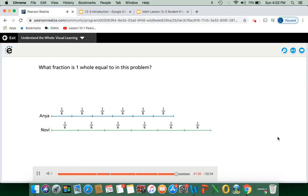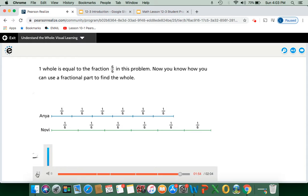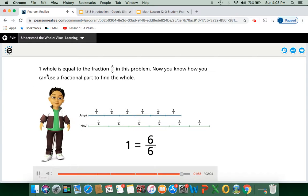What fraction is one whole equal to in this problem? So think about it for a second. One whole is equal to the fraction six-sixths in this problem. Now you know how you can use a fractional part to find the whole. So these are both six over six, and they equal one whole. So they both represent the same thing. Keep that in mind for understanding the whole.